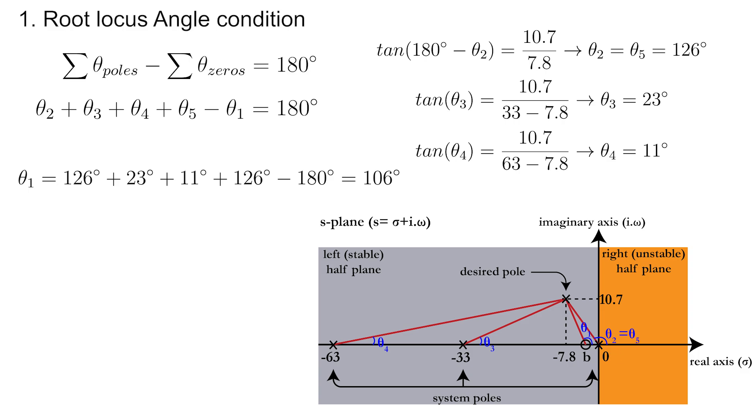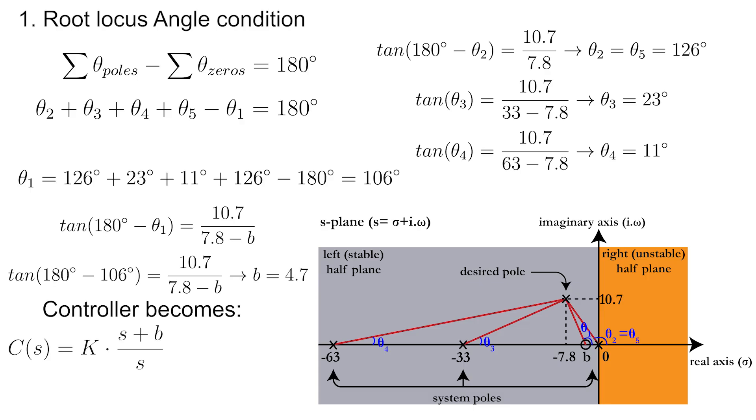This allows us to calculate angle 1 as well, and knowledge of this angle enables us to calculate the value for B, leading to a controller with only the value of K still unknown.